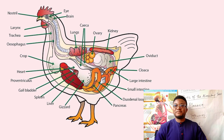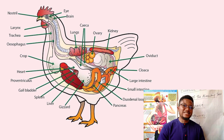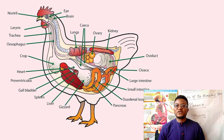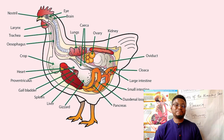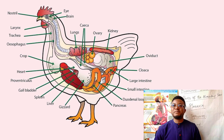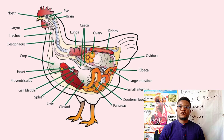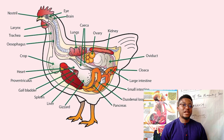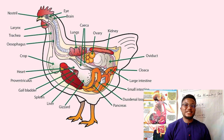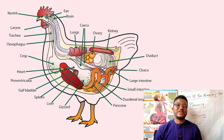The bird uses the beak to pick out fruits, grains, and many other foods because they don't have teeth. The food then moves through the mouth to the oesophagus down to the crop. The food is stored temporarily in the crop where it is moistened and fermented by various bacteria.